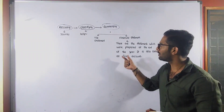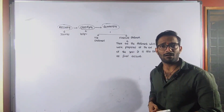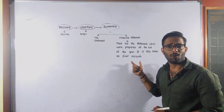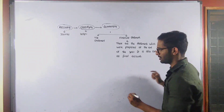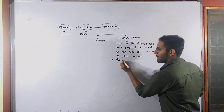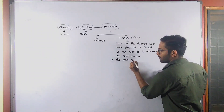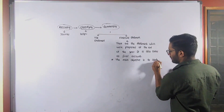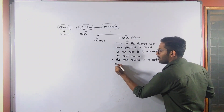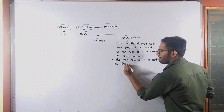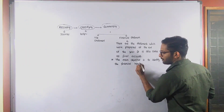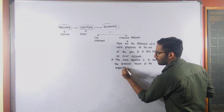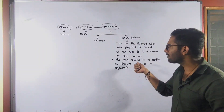The main objective of preparing financial statements is to identify the financial results of the organization. So why are financial statements prepared? The objective is to identify the financial results of the organization. What are those financial results?